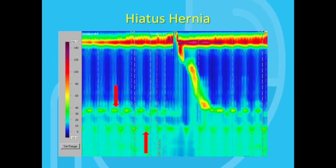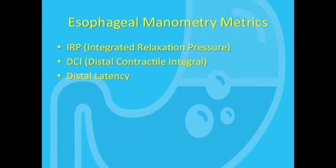In this tracing, you can see the upper greened pressure band indicating the level of the LES, and below, another pressure band seen intermittently on inspiration as the diaphragm exerts pressure on the hernia. This is a classic picture of hiatus hernia.